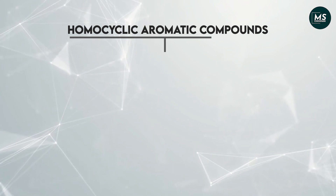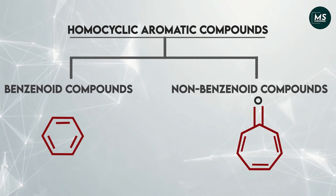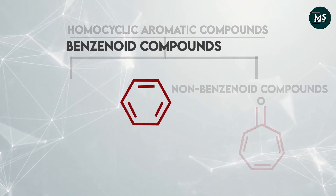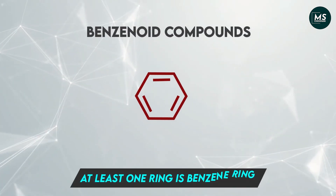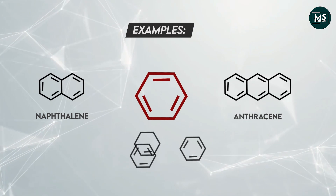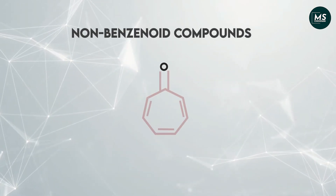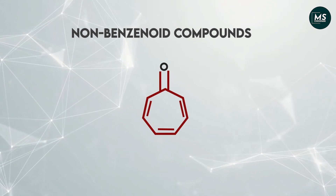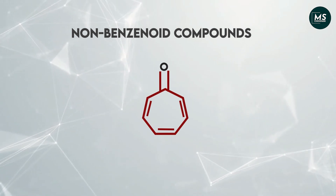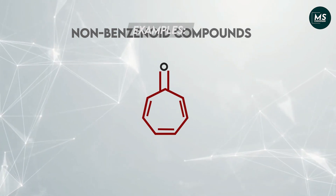Homocyclic aromatic compounds are classified into two categories: benzenoid compounds and non-benzenoid compounds. Benzenoid compounds have at least one benzene ring, as we can see in these examples. On the other hand, non-benzenoid compounds have benzene-like stability but do not have a benzene ring, as shown in these examples.